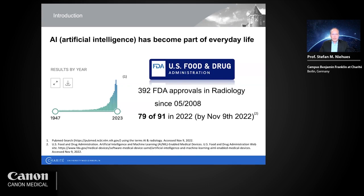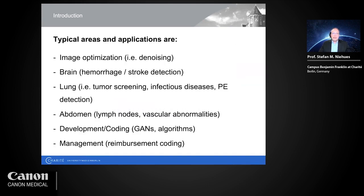Typical areas of application already available include image optimization like denoising, brain applications for hemorrhage and stroke detection, lung applications for tumor screening, infectious diseases and pulmonary embolism, and abdominal applications for lymph node detection and vascular abnormalities. We also have many AI applications in management, for example for reimbursement coding, but today's talk is more clinical.